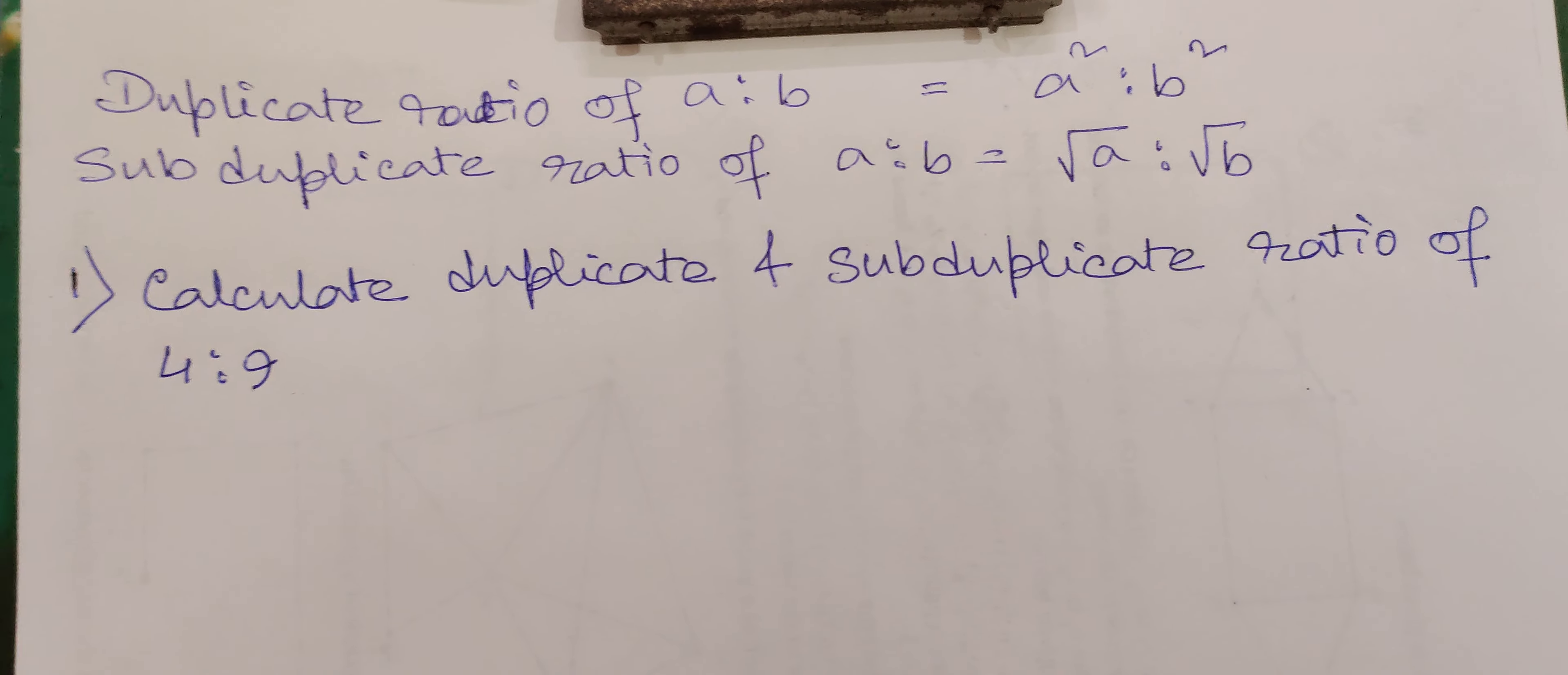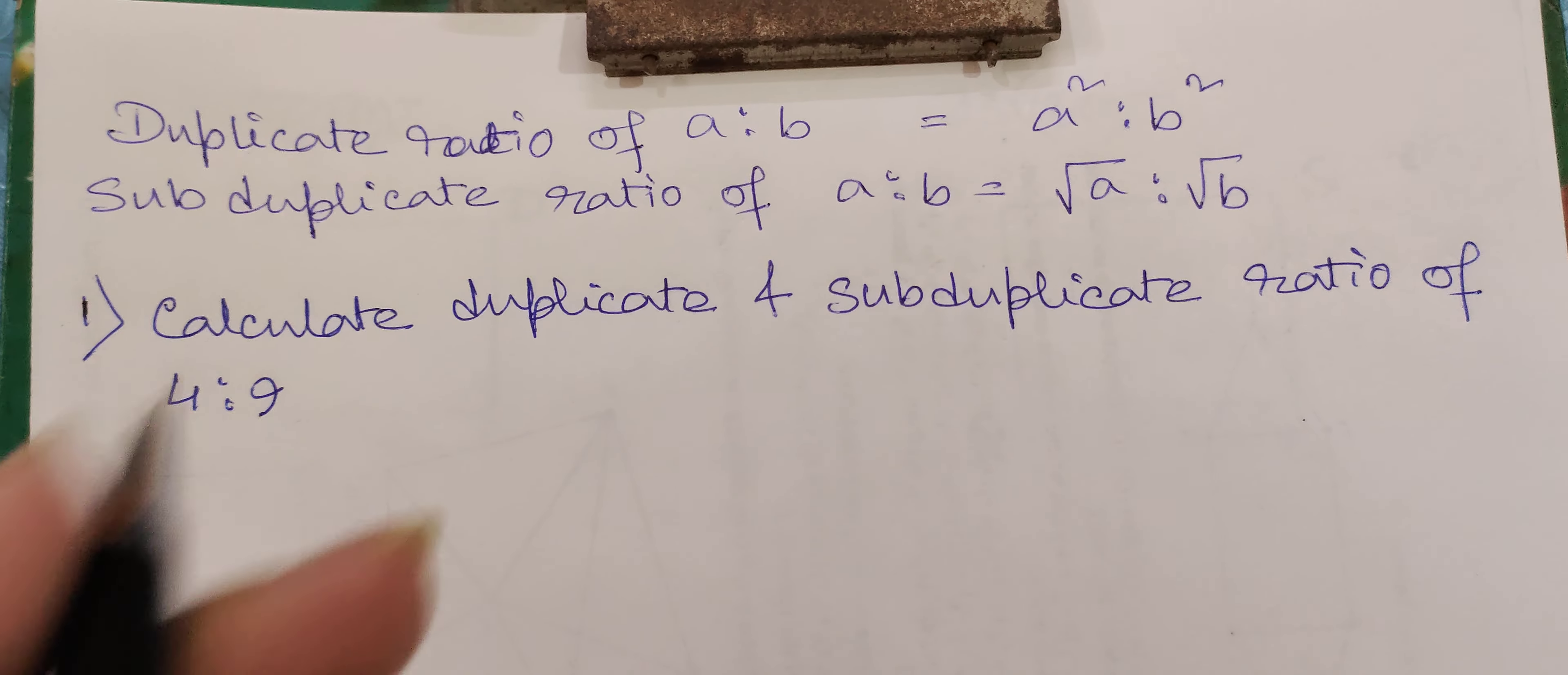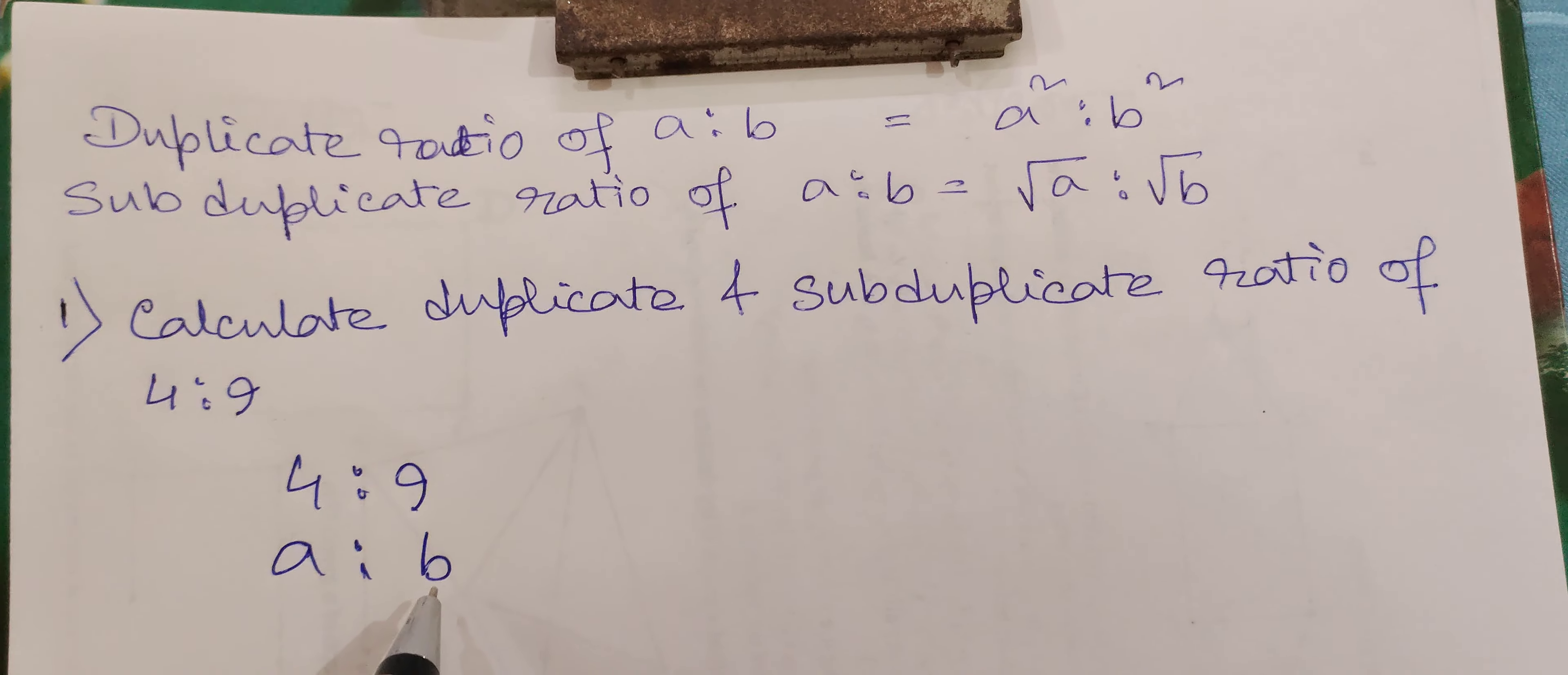Now let's discuss this with one example. Calculate duplicate and subduplicate ratio of 4 is to 9. So 4 is to 9, you can say it as a is to b, so a is 4 and b here is 9.